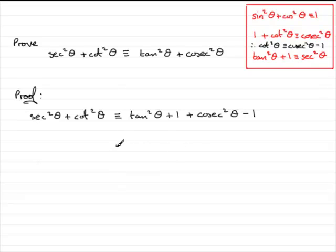So, that goes underneath here. Don't forget the identical sign and we've got tan squared theta plus cosec squared theta. And that's how you set out this identity.